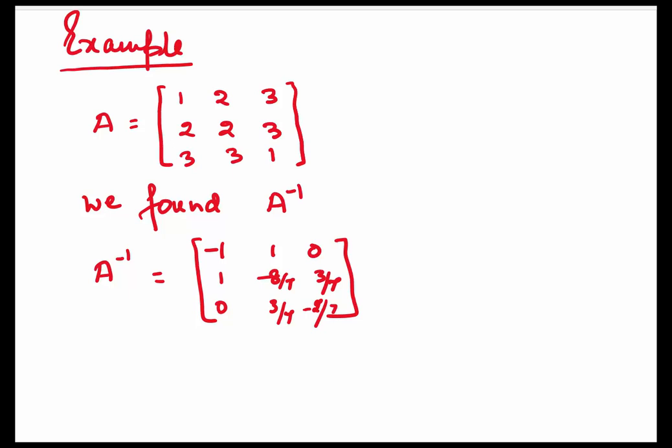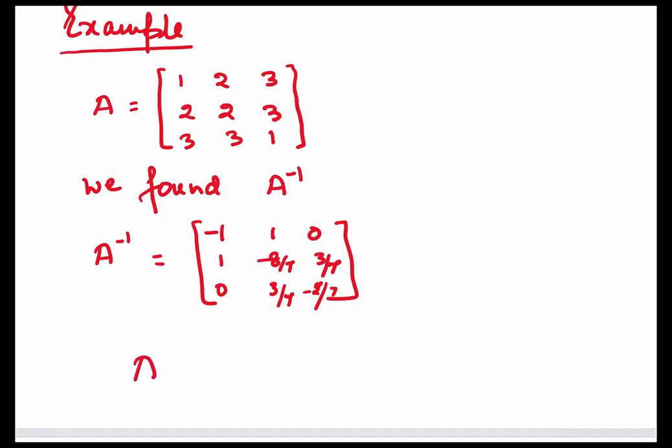I have taken an example which I had done when we were finding the inverse of a matrix using the augmented matrix. The same example is taken here but we will now find the inverse using determinants. The matrix A is 1, 2, 3, 2, 2, 3, 3, 3, 1. To find the inverse using the formula 1 upon determinant A times adjoint A, we need to find two things: the determinant and the adjoint.